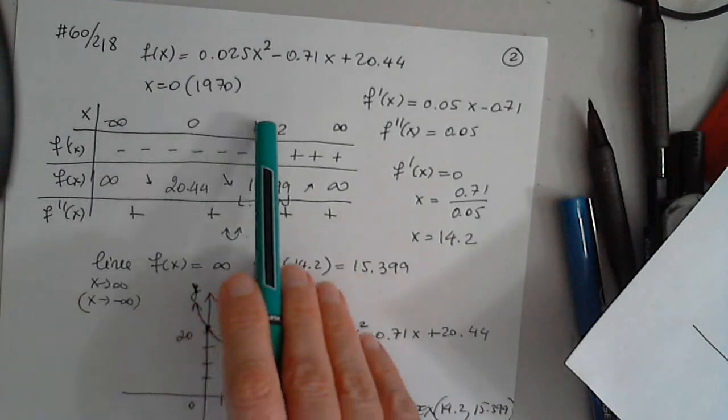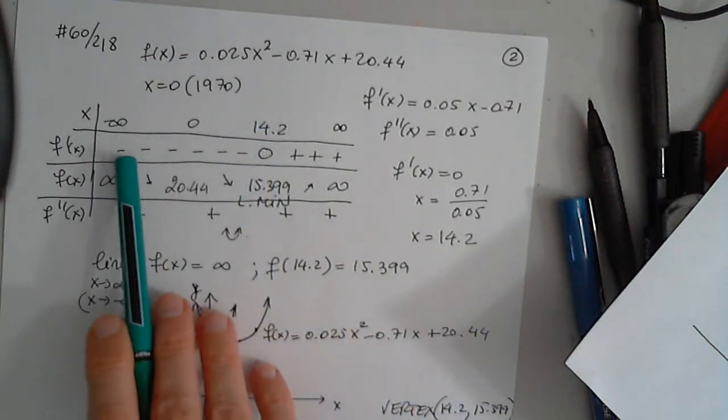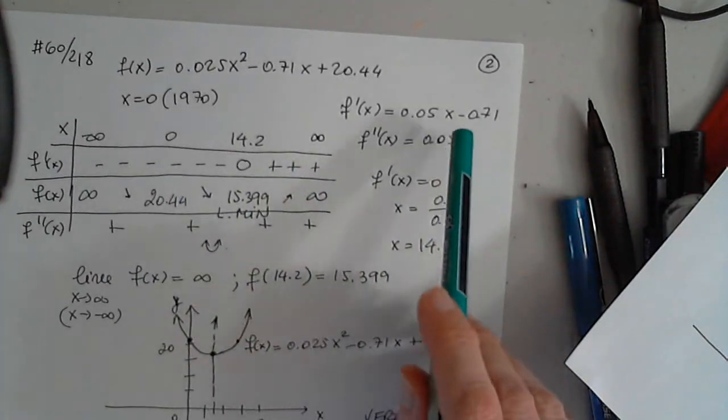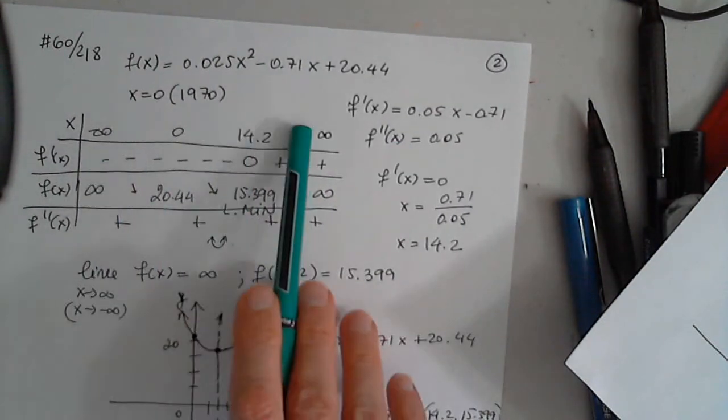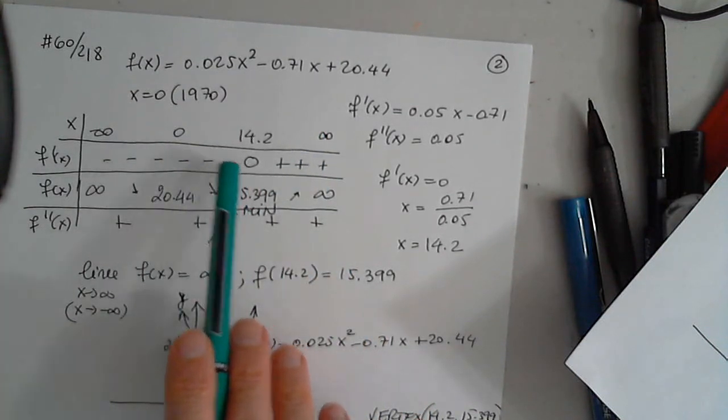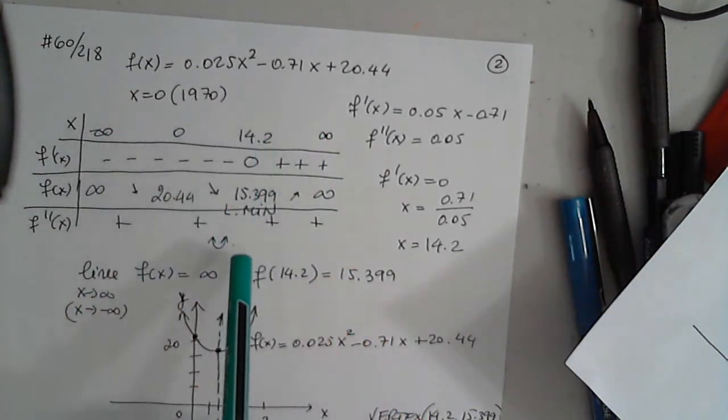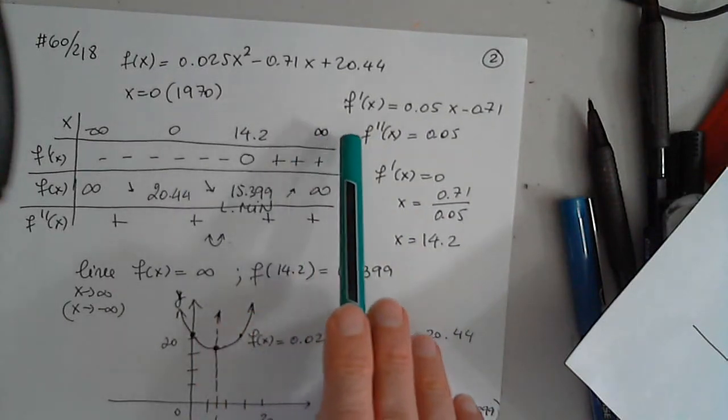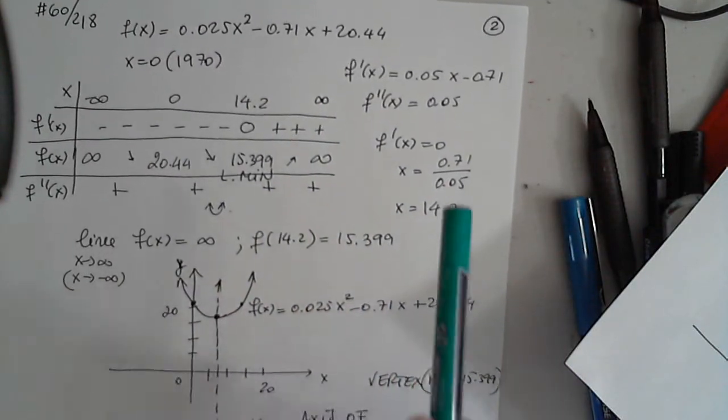And the first derivative is 0. It changes sign. Why? Because if I plug in 0, I get a negative number. If I plug in anything to the right, it's a positive number. So the function must be decreasing between negative infinity and 14.2, and increasing between 14.2 and infinity.